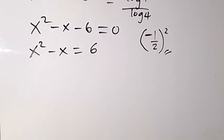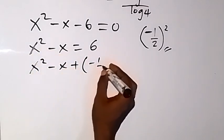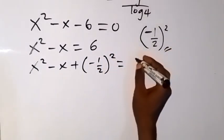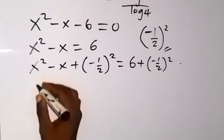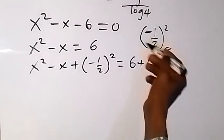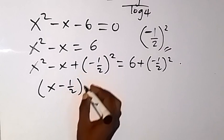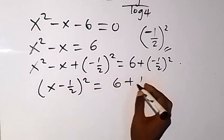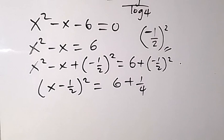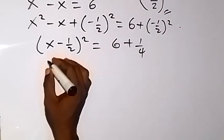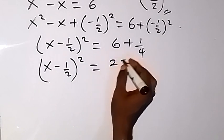So let's add this to both sides of the equation now. We then have x squared minus x plus (minus one half) squared, equals to 6 plus (minus one half) squared. This gives us x minus one half, squared, equals to 6 plus one quarter, which is the same as 25 over 4.